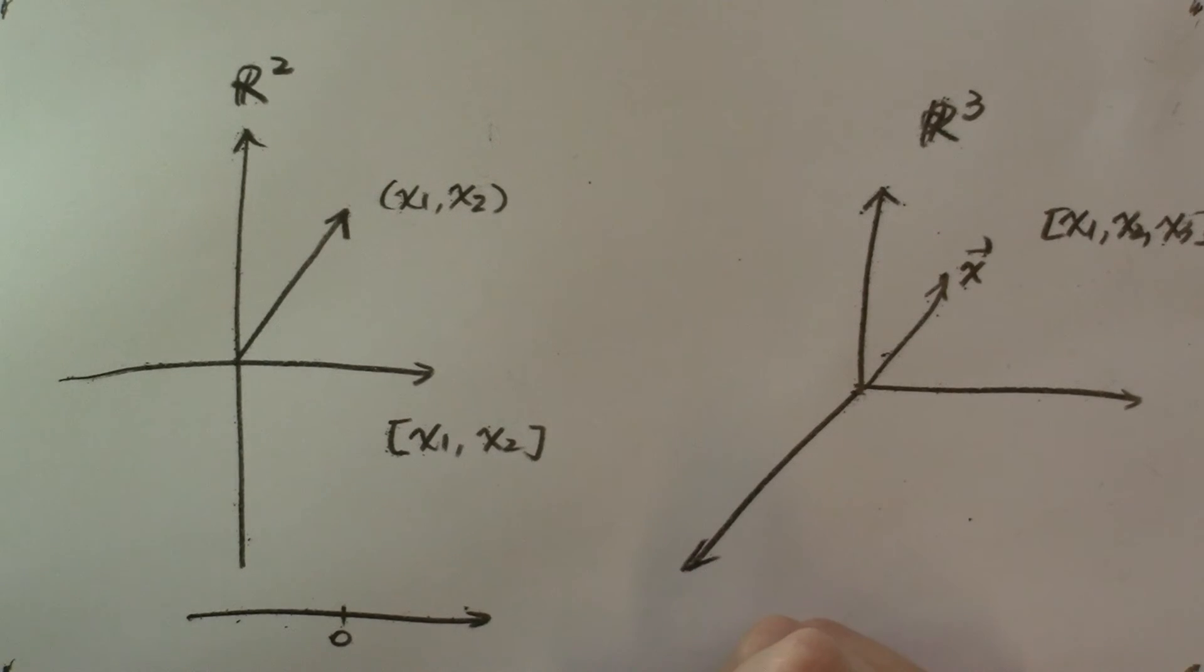We can generalize the idea to n dimensions, so that Rn is the space hosting all the vectors with n entries: x sub 1, x sub 2, etc., x sub n.